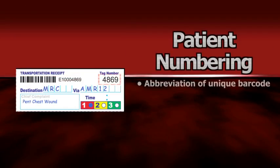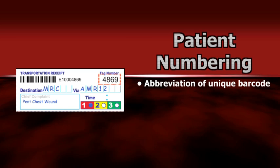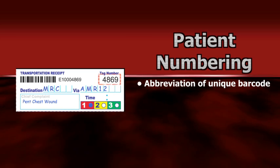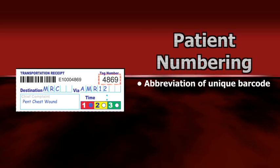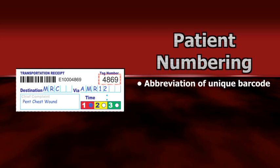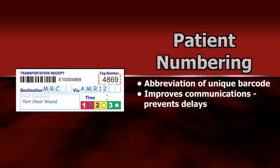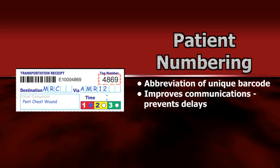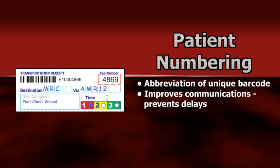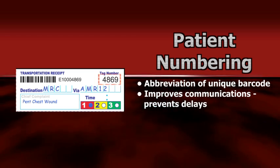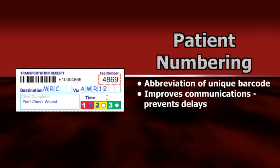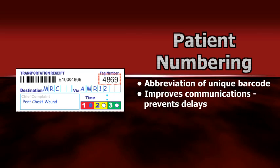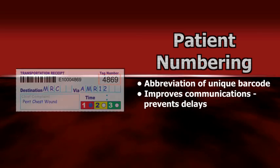Each transportation receipt contains an abbreviated version of the unique barcode number in the right-hand corner — this is the patient's identification number. This number is to be used in all communications when referring to the patient. The simplified format will prevent delays or errors inherent in other numbering systems.